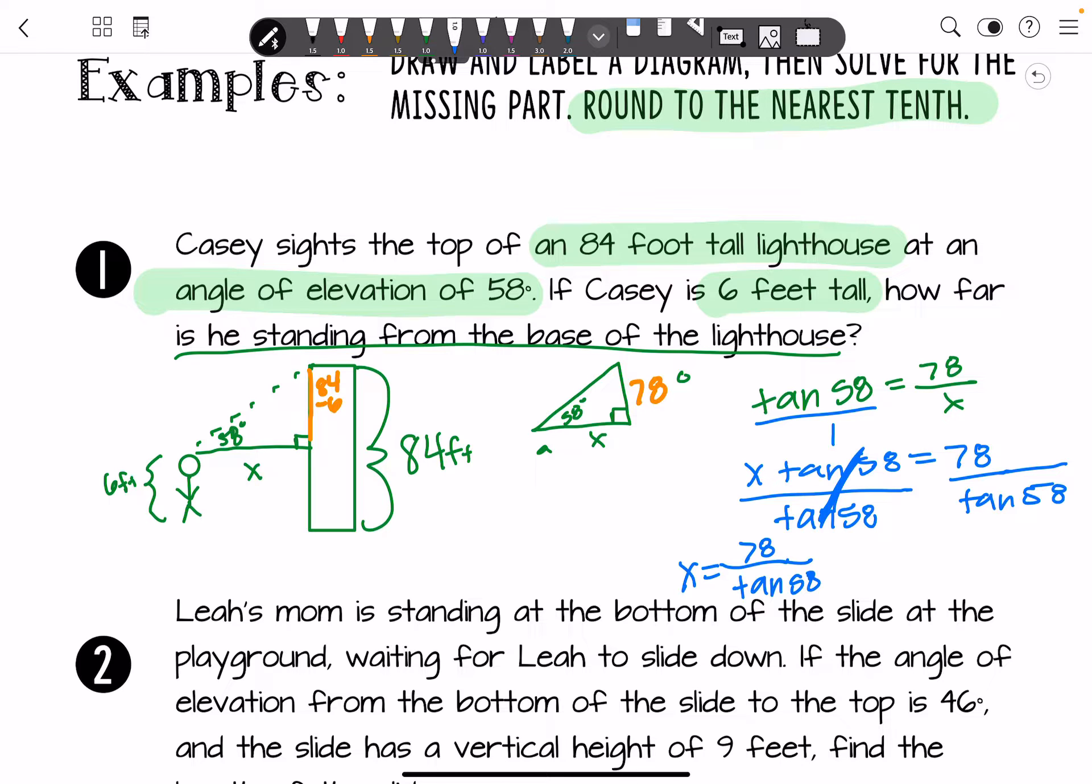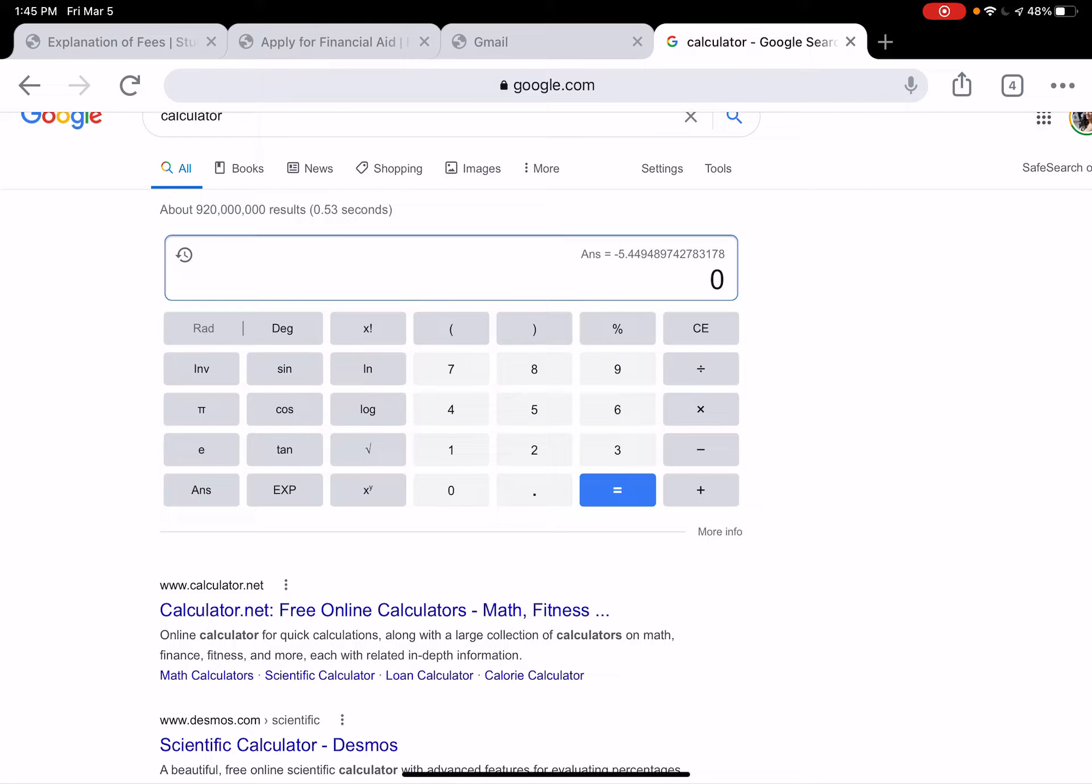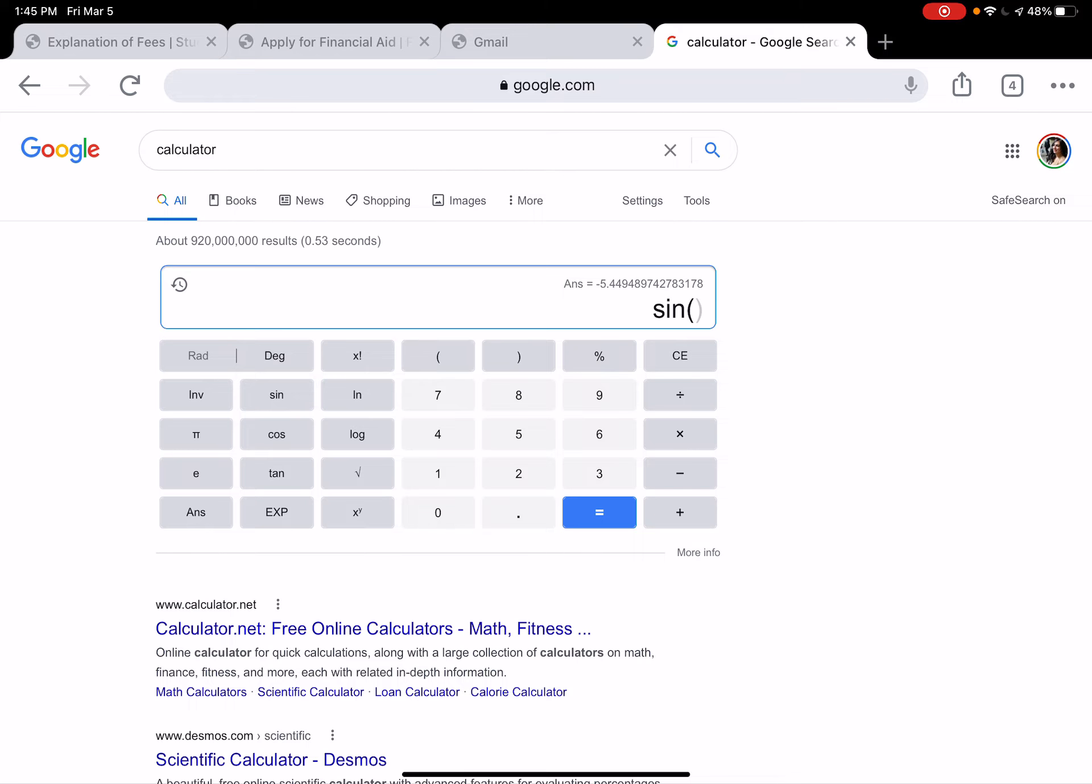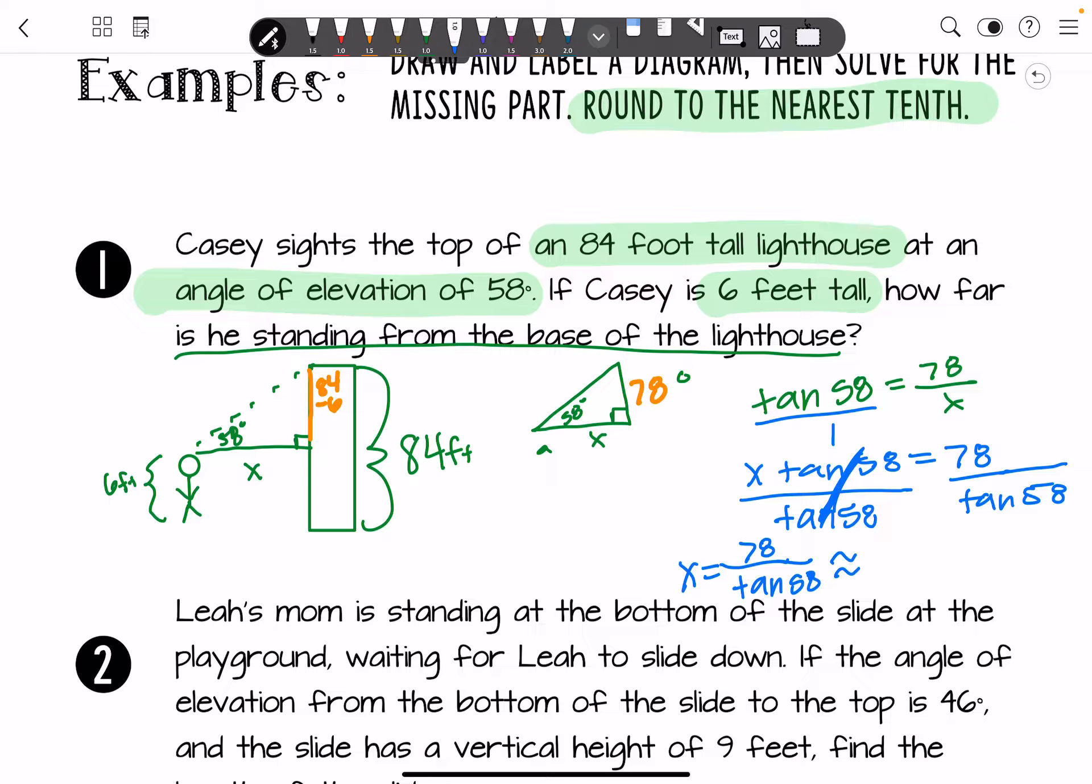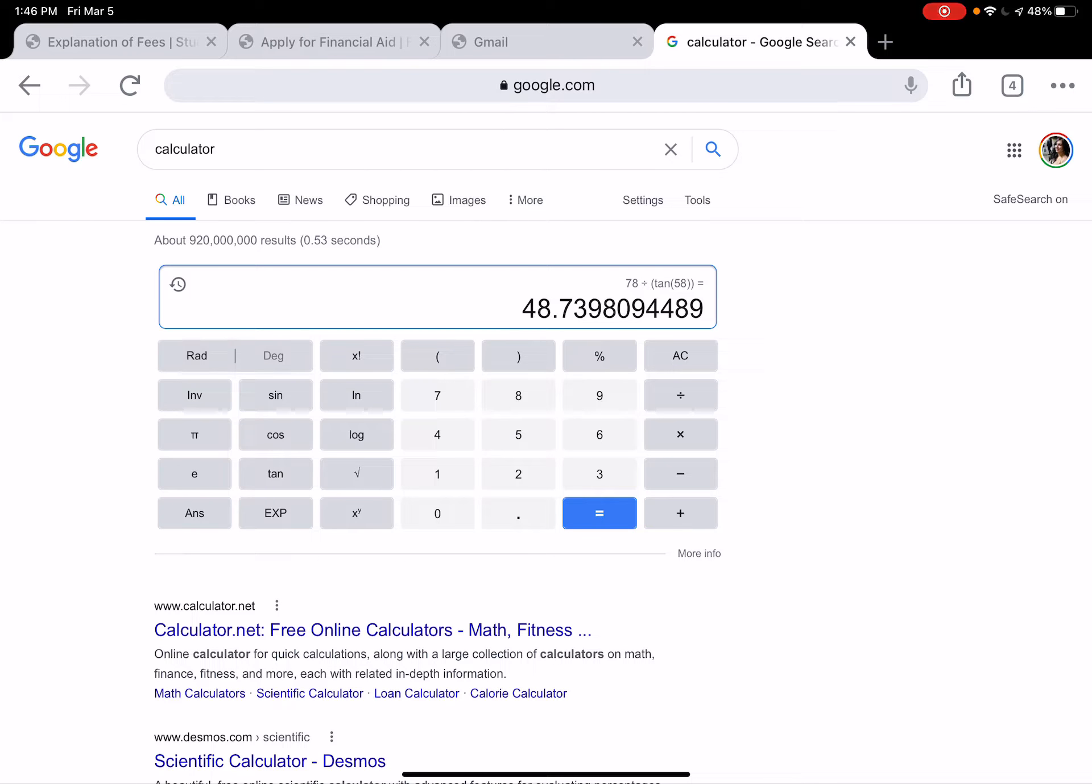If you've got your graphing calculator, please be sure to use it and make sure that you are in degree mode. If you do not have that graphing calculator, you can definitely just use the calculator on Google. Notice that I have mine in degree right here. And I'm going to type it in: 78 divided by tangent of 58. And I get about 48.7 feet. Now notice if you had it in radians, you would get something like 9.36. So it does make a difference if you're in radians or degrees. Always make sure that you are in degrees so that you can get the correct answer.